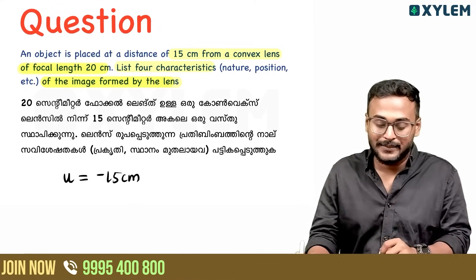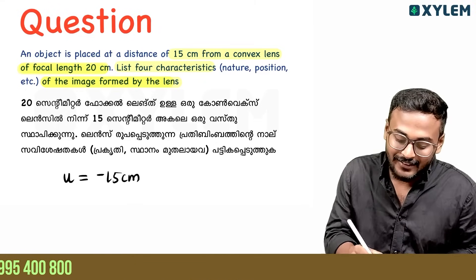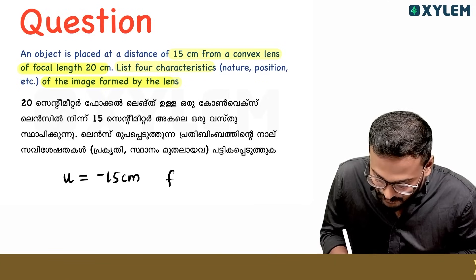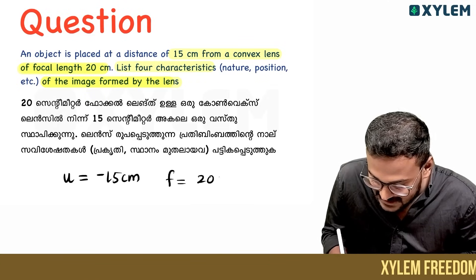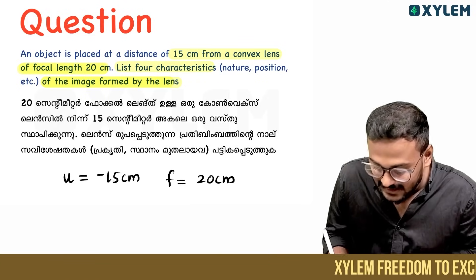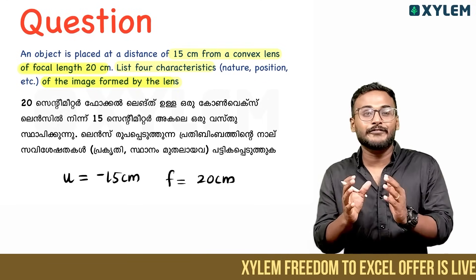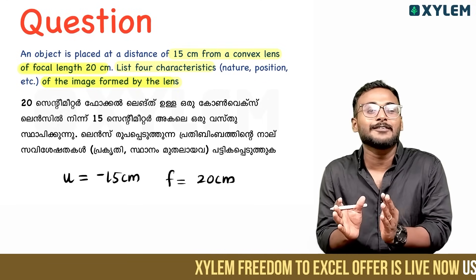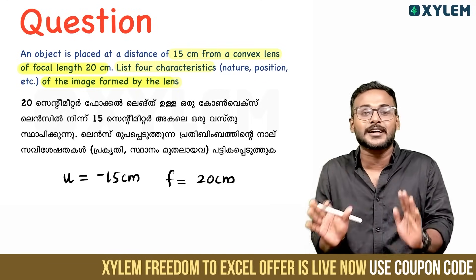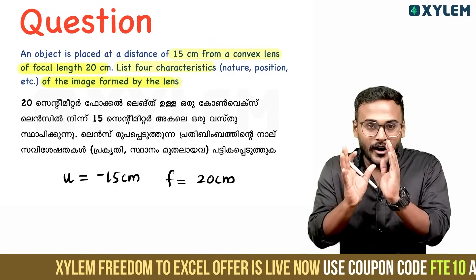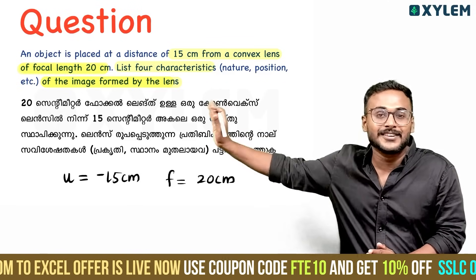Next, the focal length. For a convex lens, the focal length is positive. So object distance is minus 15 centimeters and focal length is plus 20 centimeters for the convex lens.